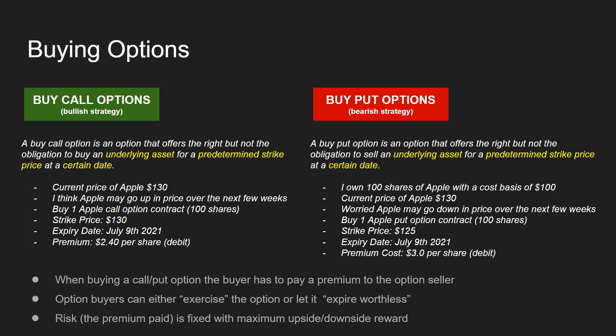When you buy a call or put option, the buyer pays a premium to the option seller — $240 for the call example and $300 for the put example. As an option buyer, you can either exercise the option — willing to buy or sell your 100 shares at your predetermined strike price — or you can just let it expire worthless. In all cases you lose the premium, but you accept that for the upside gain or the downside protection. The premium paid is fixed, so you know your risk up front, but you've got maximum upside or downside reward.